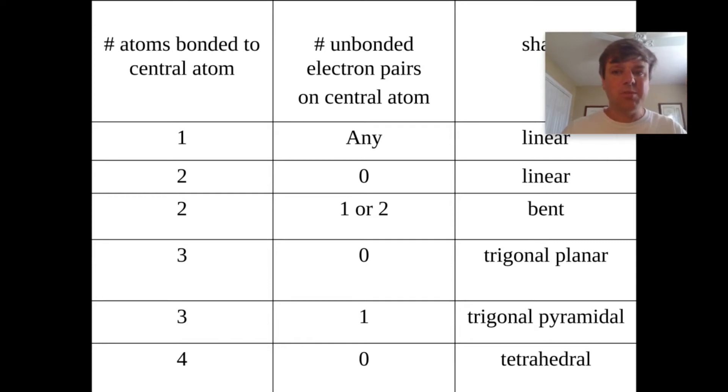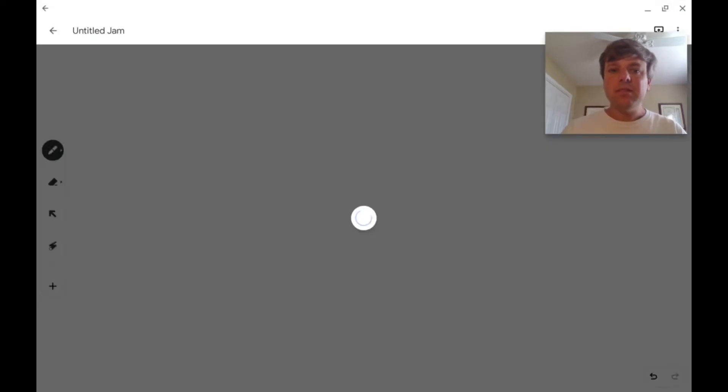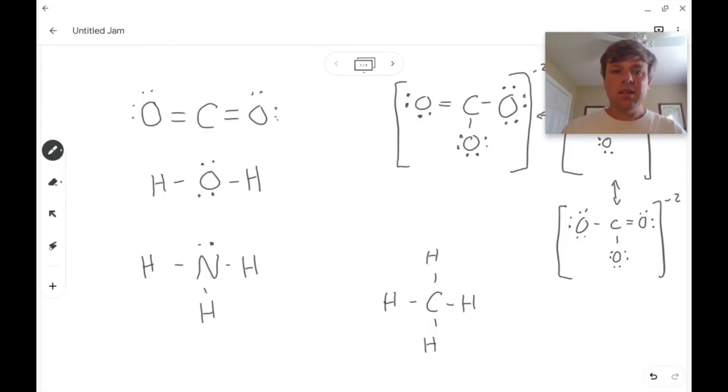So let's see how this actually plays out with some examples. If we look at the first example on the screen on the top left, we have the CO2 molecule, you have a carbon, carbon has two atoms bonded to it, carbon has no lone pairs of electrons, so those oxygens will get as far apart from each other as possible. So this molecule is linear.